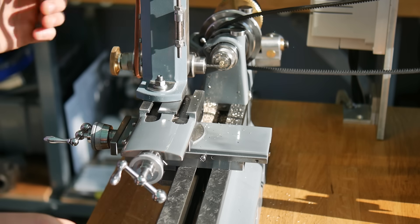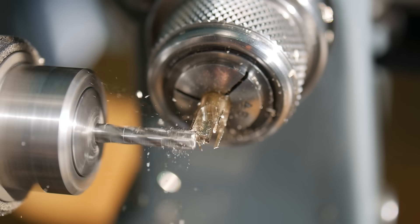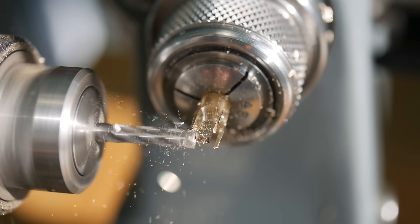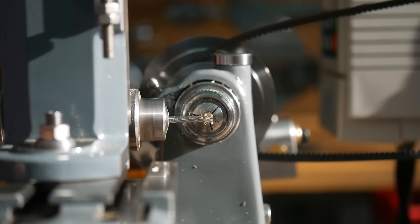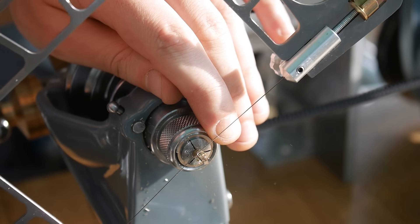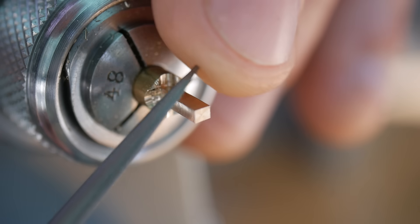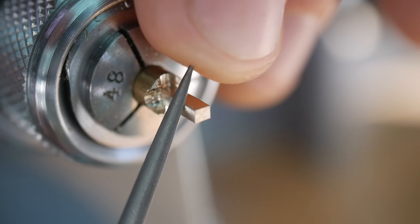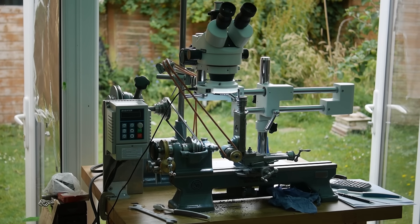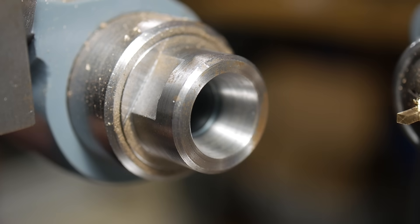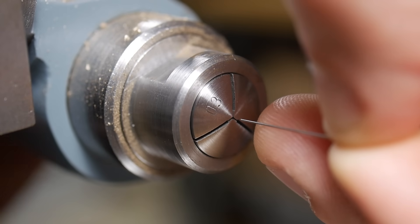The first reason is all about tolerances. As we scale down a mechanism, tolerances become more critical. Every time the component is moved from one machine to another or is unclamped and reclamped, we get an error. If we do this several times, these errors accumulate, which at this size, we just cannot afford. The second reason is that it's easier to fit a microscope to the lathe than the milling machine, at least for my machines. The microscope makes jobs like this a lot easier.